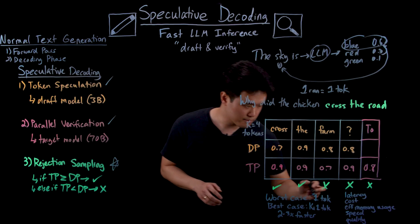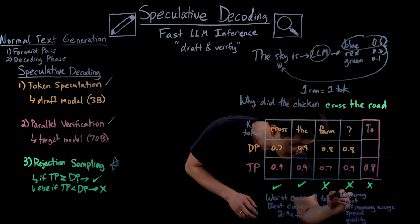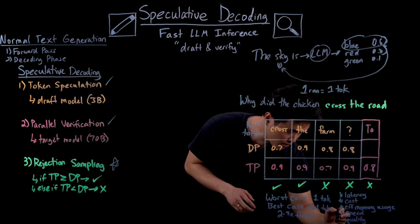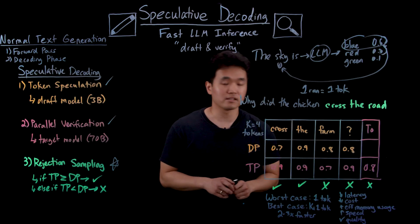So all in all, speculative decoding helps to reduce latency, decrease compute costs, boost efficient memory usage, increase inference speeds, all while maintaining the same quality of output.